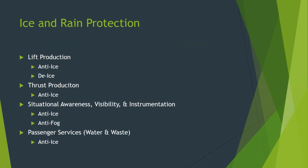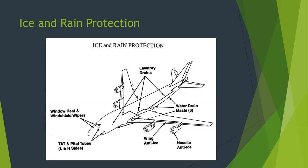And then finally, things like passenger services: we need to make sure that things like drains don't ice up so that the passenger service equipment will still work. Here's an example of an aircraft showing some of the different ice protection areas. You can see this airplane has wing anti-ice for lift protection, nacelle anti-ice for engine thrust production protection, window heat and windshield wipers to allow visibility, total air temp and pitot tubes heated to protect instrument operation, and lavatory drains and water drain masts for passenger service items in cold conditions.